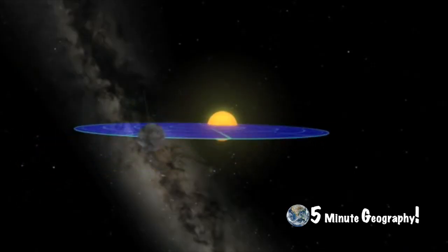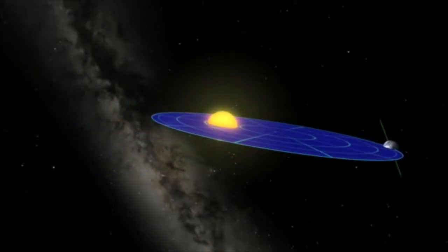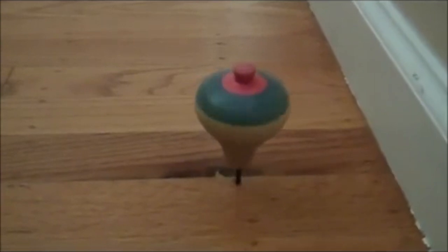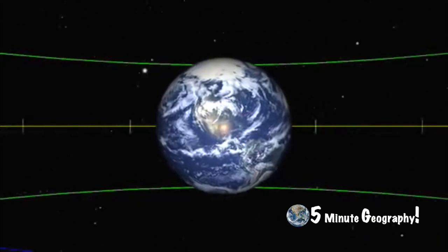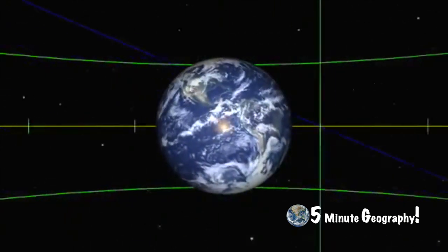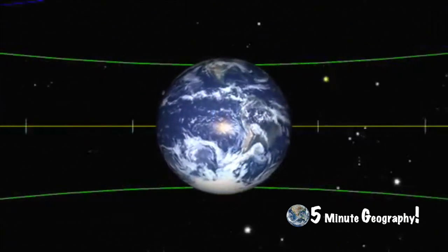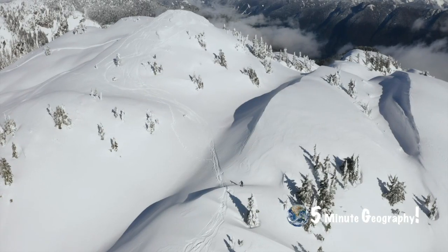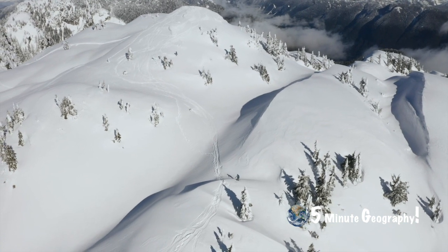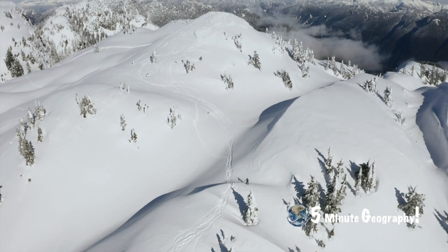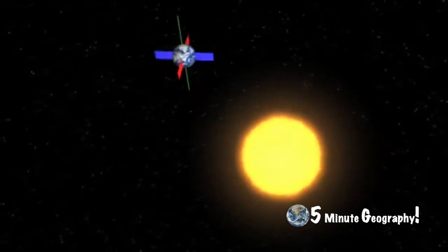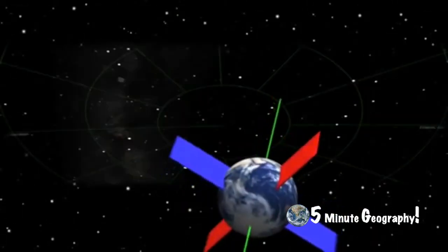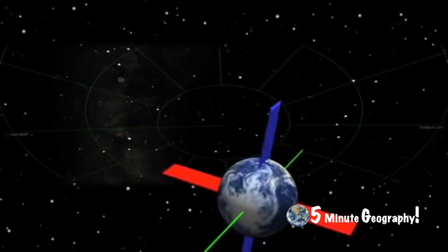As the earth rotates around the sun it wobbles, much like a spinning top would wobble as it slows down. The earth wobbles on its axis. If it wobbles away from the sun it gets colder, as places further away from the solar energy will naturally become colder. The earth's wobble changes every 25,000 years.